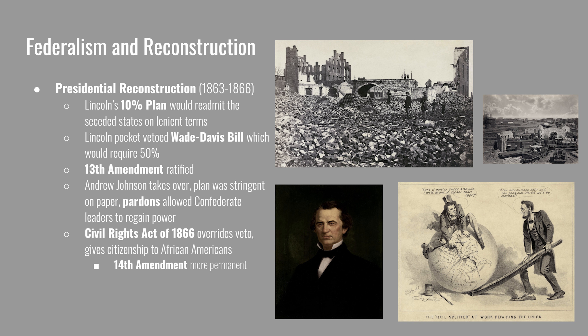The first plan of Reconstruction was Presidential Reconstruction, led by President Lincoln. In 1863 he began to think about what a post-Civil War United States would look like. The way Lincoln saw it, secession was unconstitutional, so technically the Southern states were only in rebellion and had never left. His plan said that as long as 10% of the citizens of a state pledged loyalty to the United States, the state would be re-admitted. It was very lenient compared to other plans.